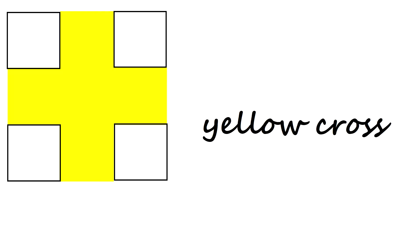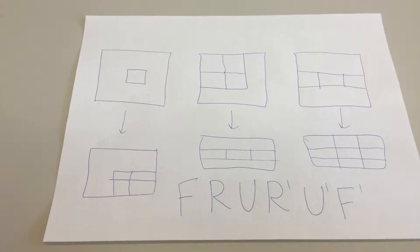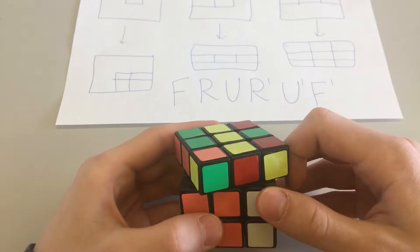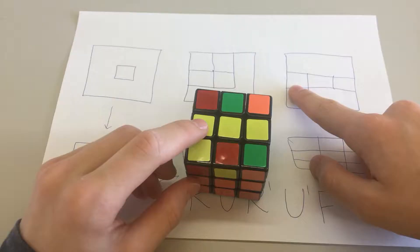Then you need a yellow cross. For that you need just one formula. The guide is pretty self-comprehensive, but I'll still explain. There are three possible starting positions: a dot, a tick, and a stick.